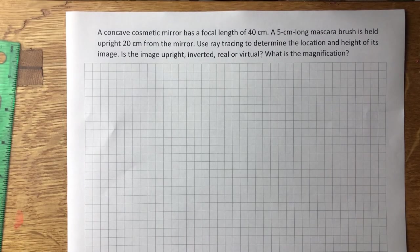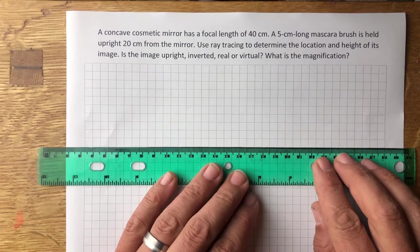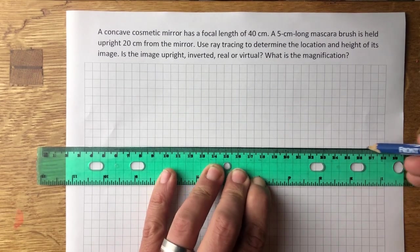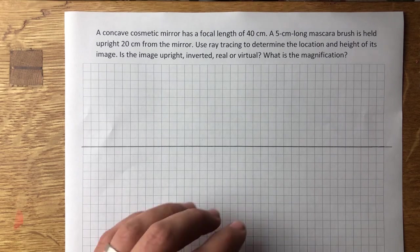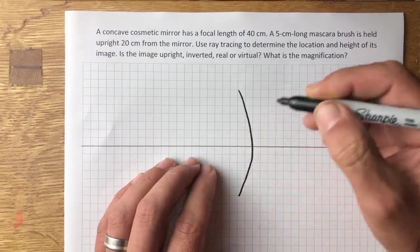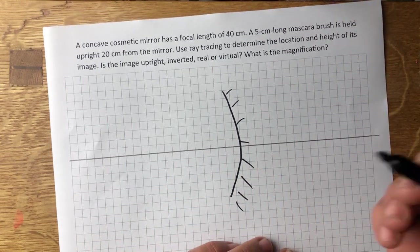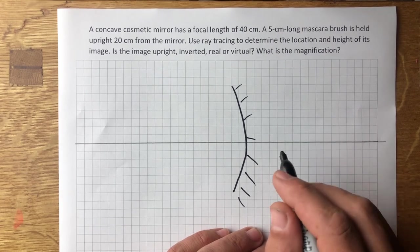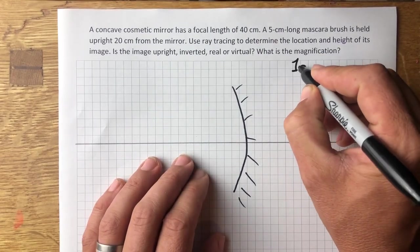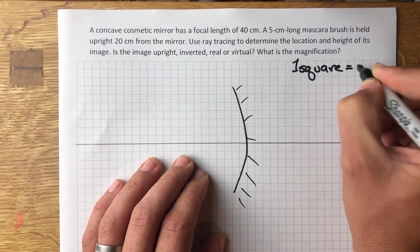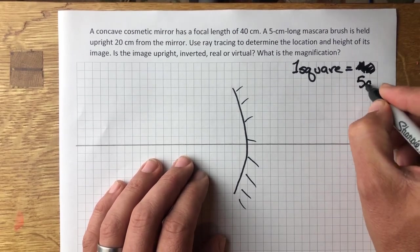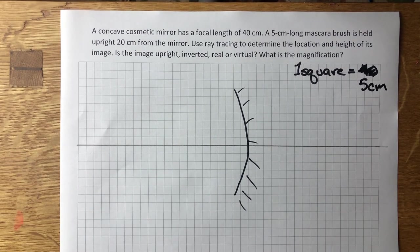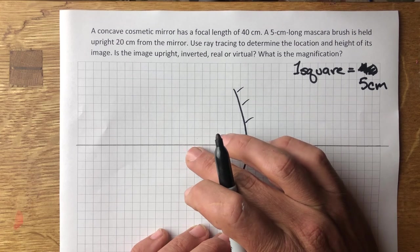Here we have a converging or concave mirror. Let's draw our optical axis and draw our mirror. Let's mark our focal point — it has a focal length of 40 centimeters. Let's let one square equal five centimeters. So our focal point will be eight squares from the mirror.